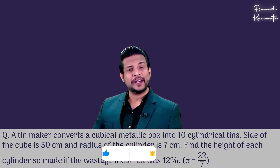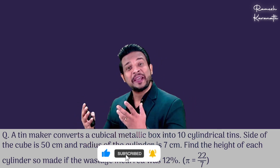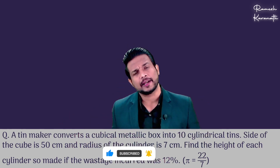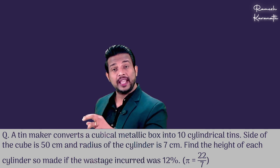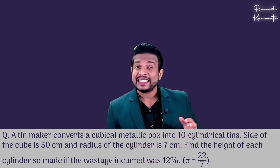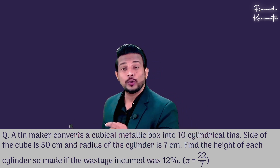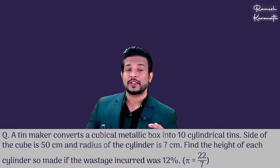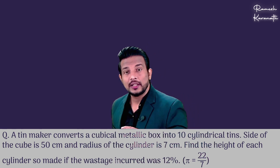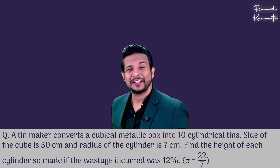Hello, let's discuss today's video about the best sum from the topic mensuration. Let's read it first and understand what is given. A tin maker converts a cubical metallic box into 10 cylindrical tins. The side of the cube is 50 cm and the radius of the cylinder is 7 cm. Find the height of each cylinder if the wastage incurred was 12%. The value of pi is given as 22/7.